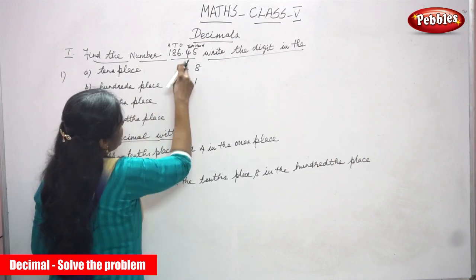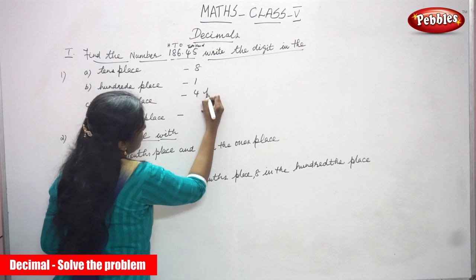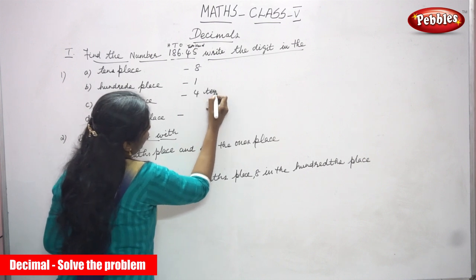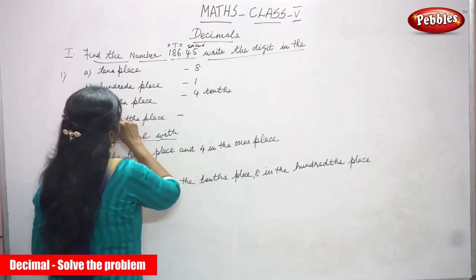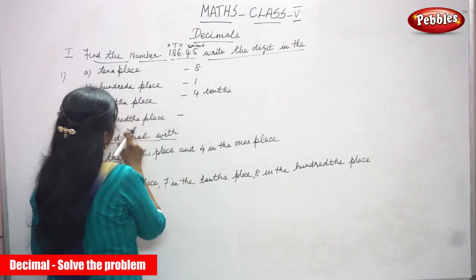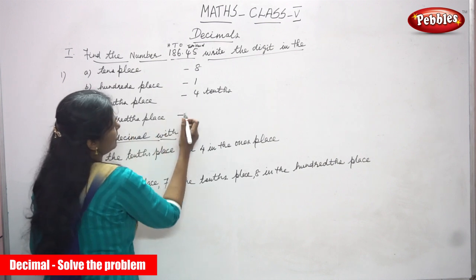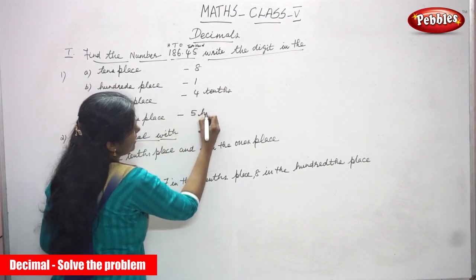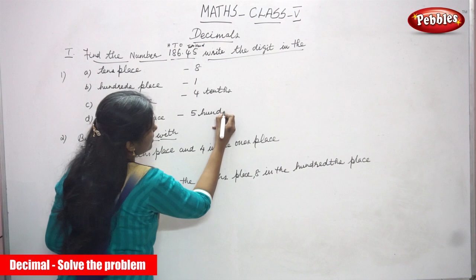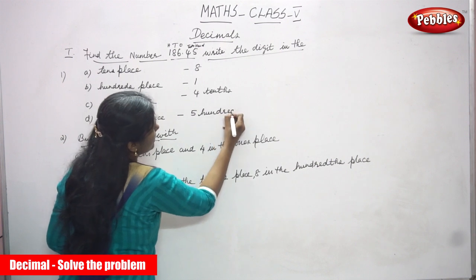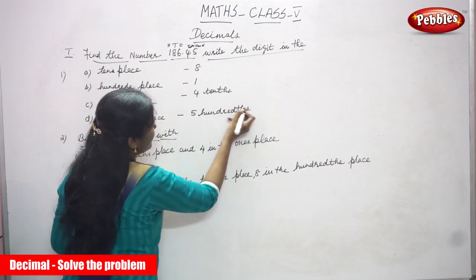And tens place, what is the number? 4 tens. And after that, hundreds place, what is the number? 5 hundreds — H-U-N-D-R-E-D-T-H-S — hundredths.